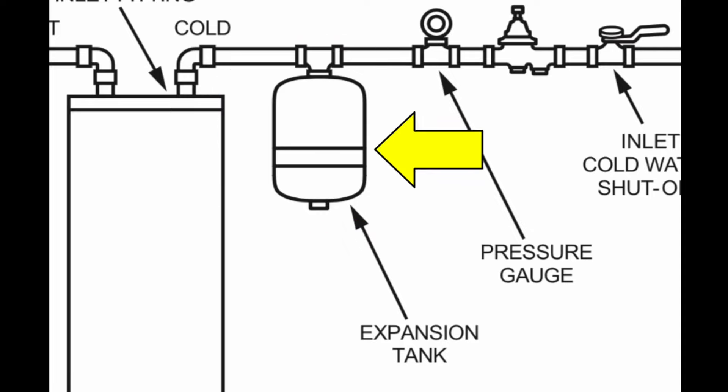The expansion tank should not be supported by the pipes that it's connected to. It should have some separate strap or way of holding the weight of the tank. The water pressure in the system should be 80 psi or less and if it's more than that, the system will need a pressure reducing valve. And finally, a cold water inlet valve is required before the water heater.